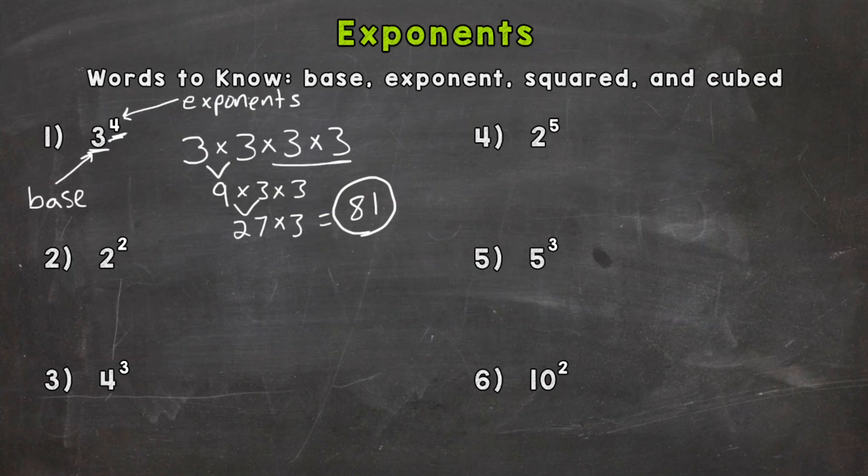So let's take a look at number two. We have two to the power of two or two to the second power. Now anything with the power of two actually has a special nickname. You can absolutely say two to the second power or two to the power of two, but you can also say two squared. So this means we take our base two and we expand it out two times, two times two. And our answer to two squared is four.